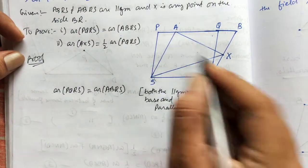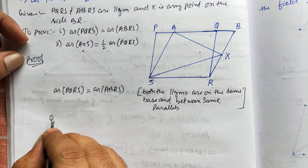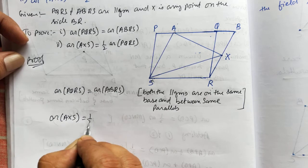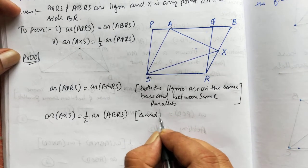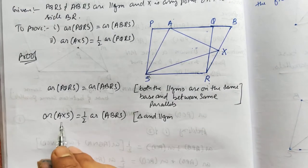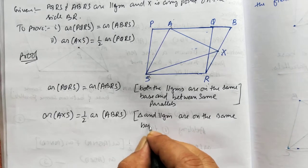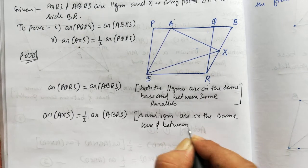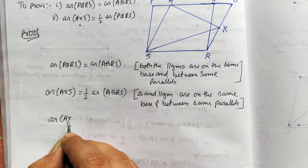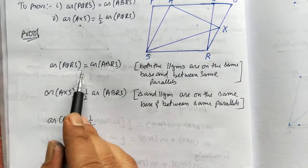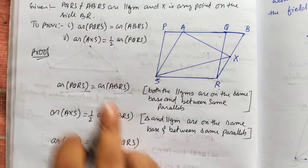For the second proof, triangle AXS is inside parallelogram ABRS. So we can say that area AXS will be half of area ABRS. The reason is: if a triangle and a parallelogram are on the same base and between the same parallels, then the area of the triangle is half of the parallelogram. So area AXS equals half of ABRS. Since ABRS and PQRS are equal, we can write area PQRS instead. Hence the second proof is also done.